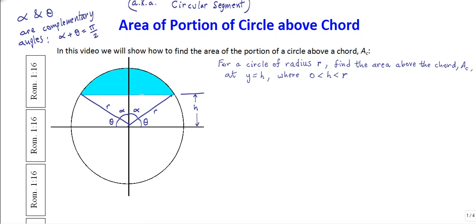Okay, and so the technique, and by the way, I've written off on the side here that alpha and theta are complementary angles. That means that alpha plus theta is equal to pi over 2 radians. Or alpha plus theta is 90 degrees.